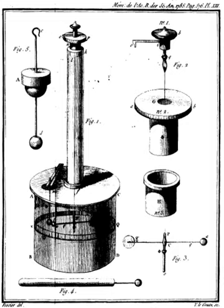An ion is an atom or group of atoms that has lost one or more electrons, giving it a net positive charge (cation), or that has gained one or more electrons, giving it a net negative charge (anion). Monatomic ions are formed from single atoms, while polyatomic ions are formed from two or more atoms that have been bonded together, in each case yielding an ion with a positive or negative net charge.